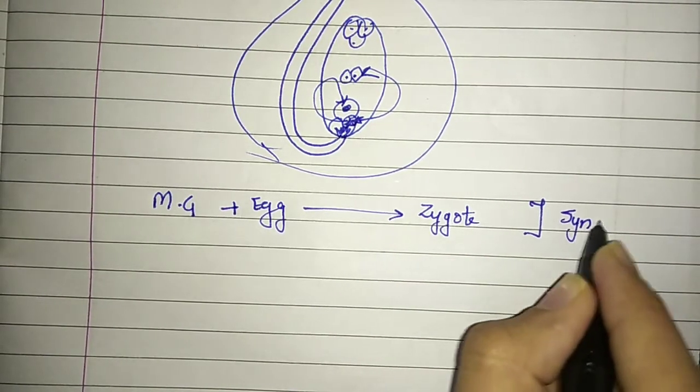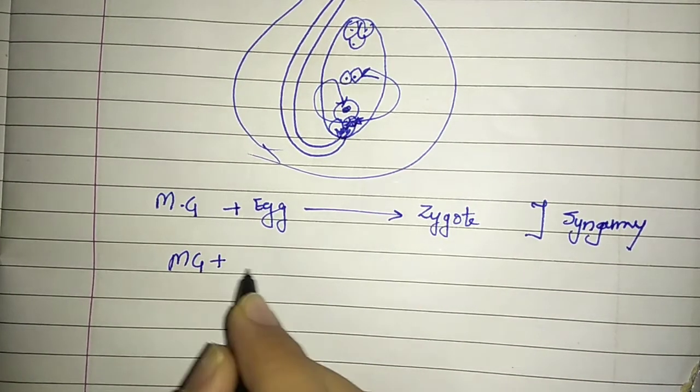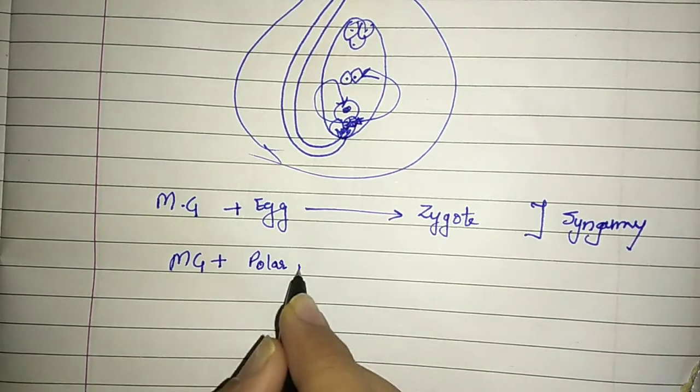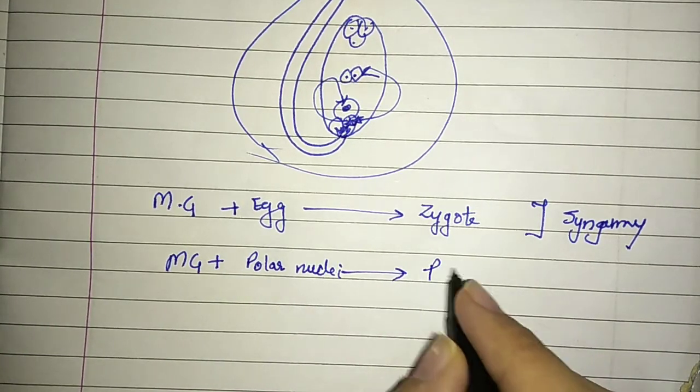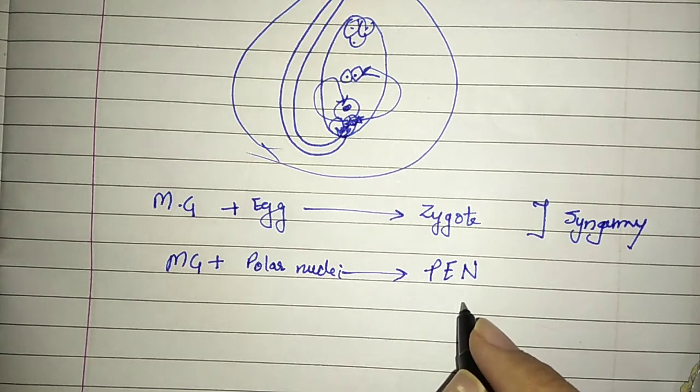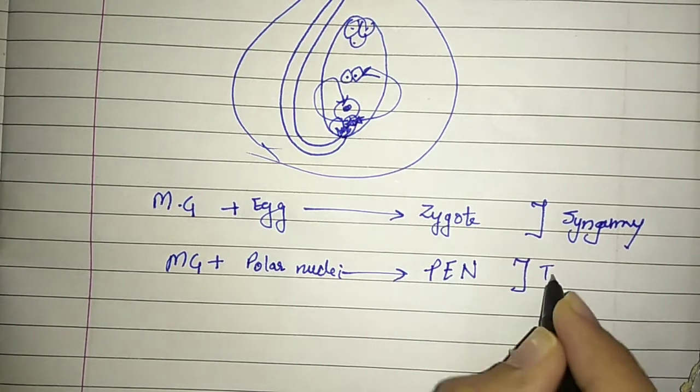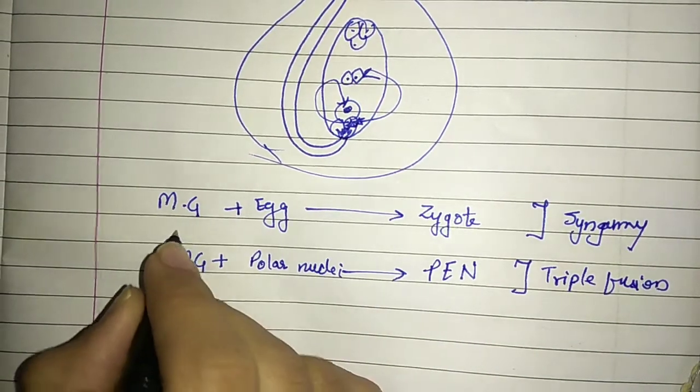The other male gamete will go and fuse with the polar nuclei and will form the primary endosperm nucleus, or primary endosperm cell. This process is known as triple fusion.